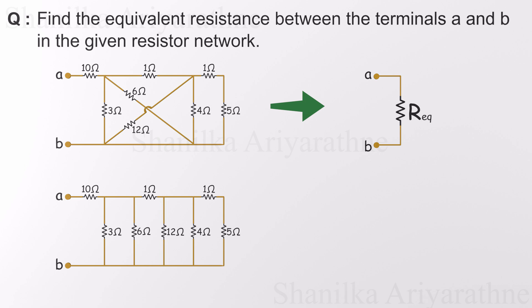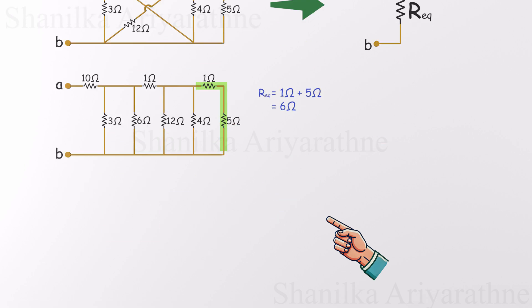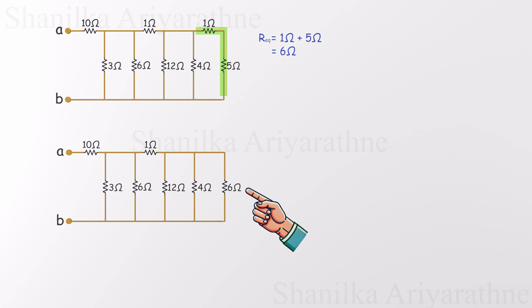Right off the bat, we spot a clear series combination, one ohm and five ohm resistors connected end-to-end with no branches in between. That's the hallmark of a series connection, and the rule is simple. Just add their resistances. So one plus five gives us six ohms. We replace those two with a single six ohm resistor, instantly streamlining the circuit and bringing us one step closer to finding the total resistance between points A and B.